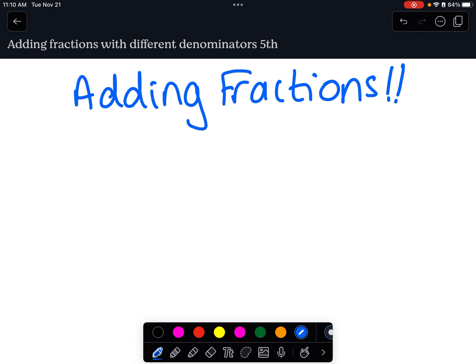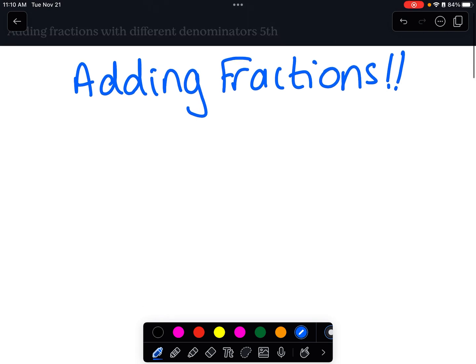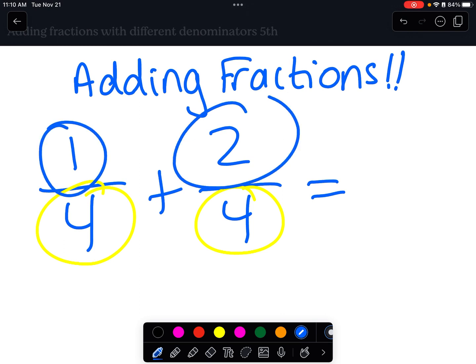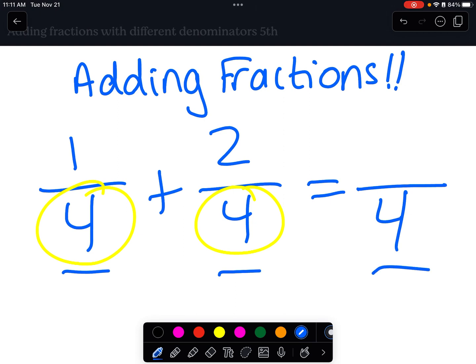So in the past, we have learned that when you have two fractions with the same denominator - denominator, remember, that's downstairs or down. Numerator, that's the number on top. So when the denominator is the same, it stays the same in the answer. 4, 4, 4.